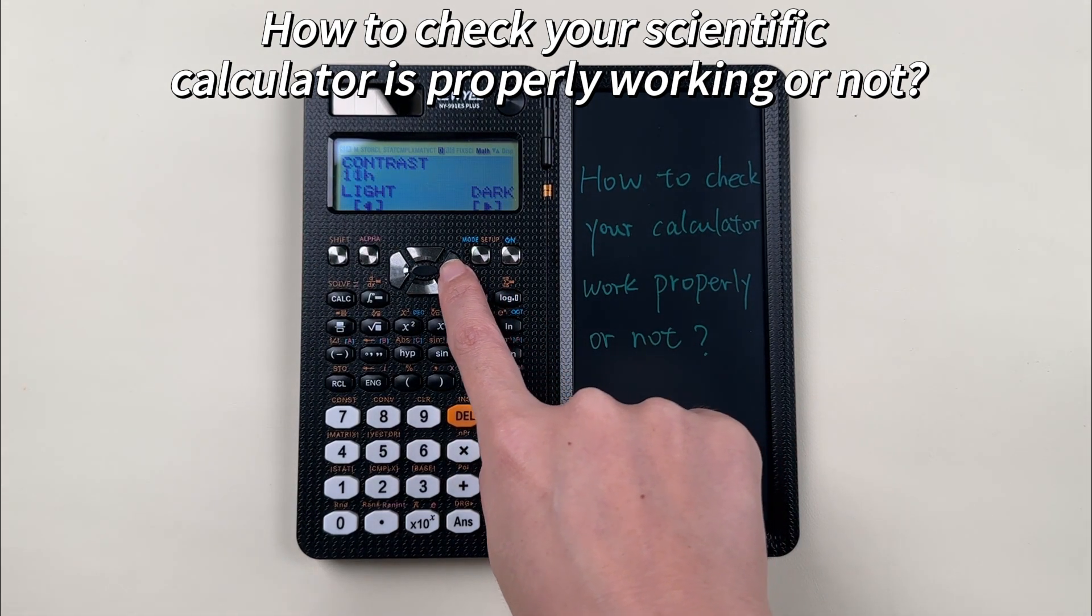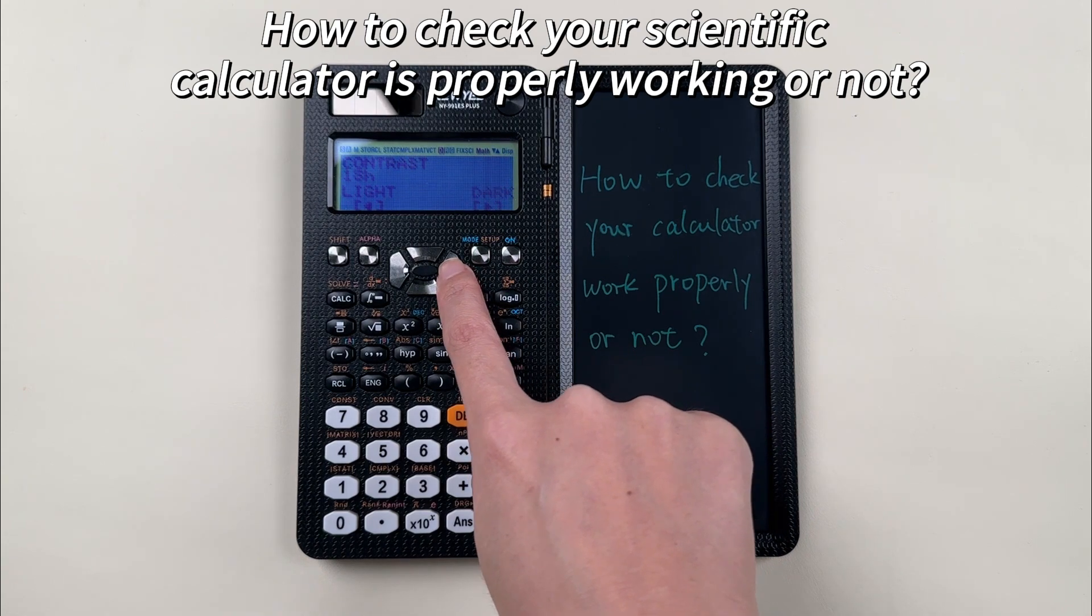Press left to make it light, and press right to keep it dark. And you can keep the contrast you prefer.